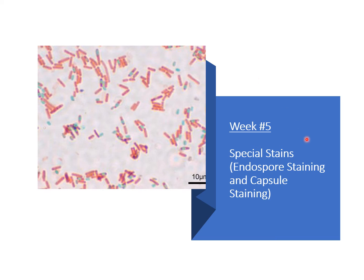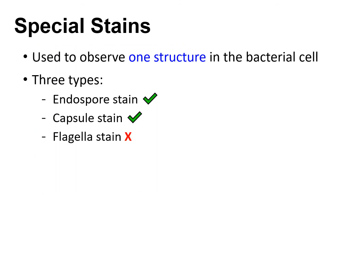This week in lab we're going to talk about special stains — specifically endospore staining and capsule staining. This image here shows an endospore stain. A special stain is used to observe one special structure about bacteria cells. There are three types: endospore stain, capsule stain, and flagella stain, but we're not going to cover flagella staining in this video.